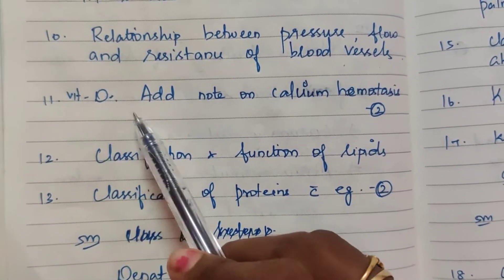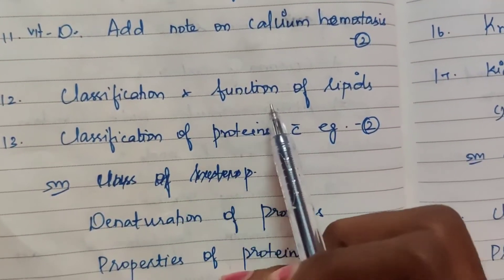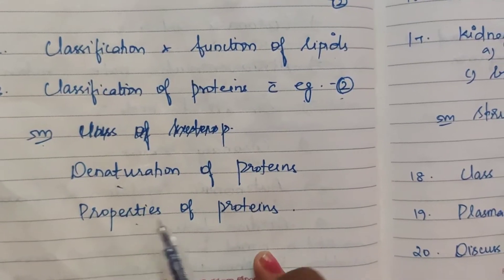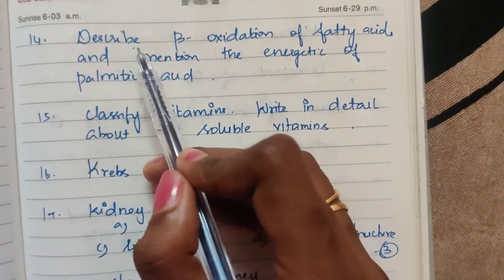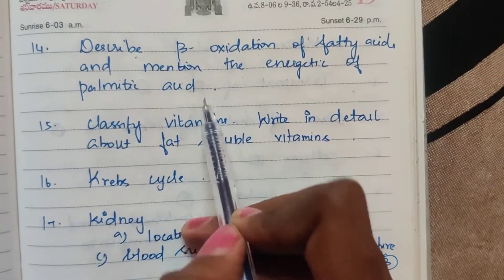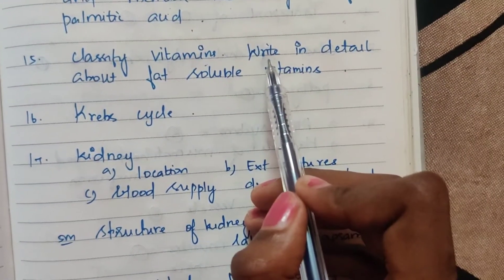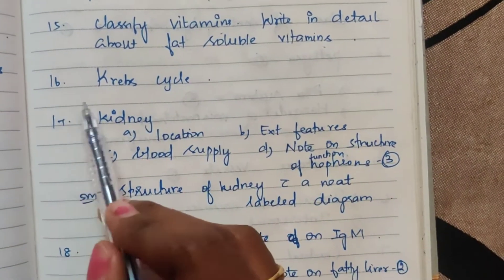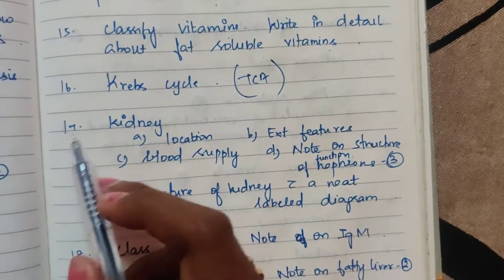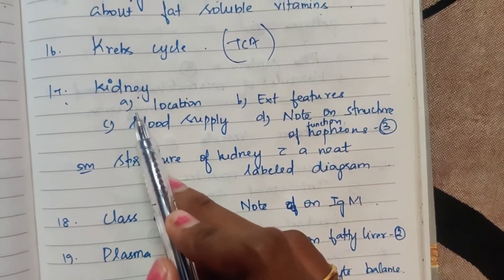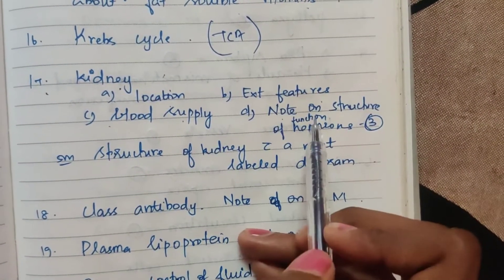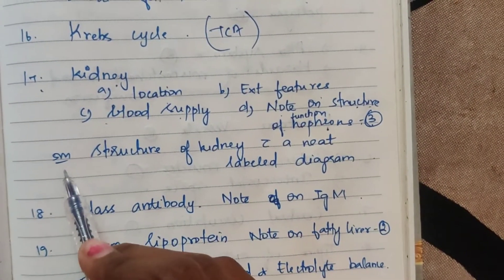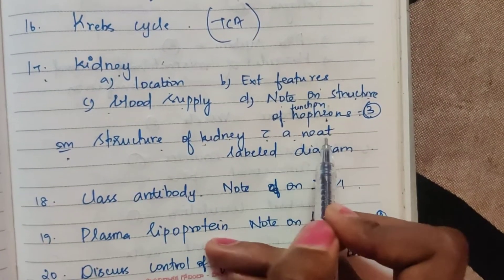Eleventh one: Vitamin D — explain Vitamin D and add a note on calcium homeostasis, two times. Classification and functions of lipids. Thirteenth one: classification of proteins with examples, two times, 5 marks. Denaturation of proteins and properties of proteins. Describe beta oxidation of fatty acids and mention the energetics of palmitic acid. Fifteenth one: classify vitamins — water-soluble and fat-soluble vitamins — write in detail about fat-soluble vitamins. Sixteenth one: Krebs cycle or TCA cycle. Seventeenth one: kidney with headings — location, external features, blood supply, structure of nephrons — and structure and functions of nephrons, appearing two to three times.